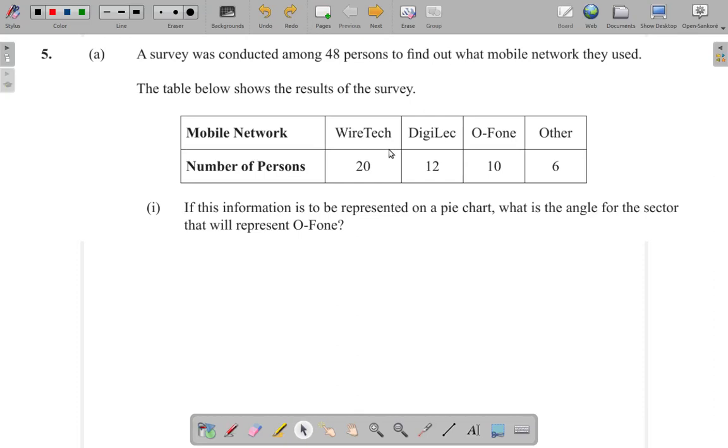Question 5. 5A1. A survey was conducted among 48 persons to find out what mobile network they used. The table below shows the results of the survey.